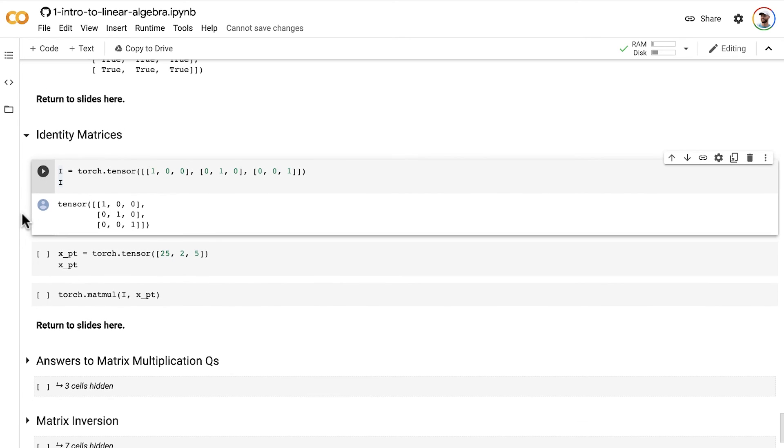If you want to, as an exercise on your own, you could try doing this creation of an identity matrix and the rest of the steps we're talking about here in any of the three libraries. Anyway, I'm creating the identity matrix in PyTorch.